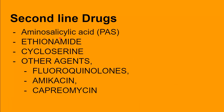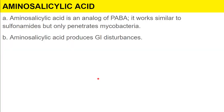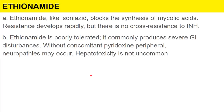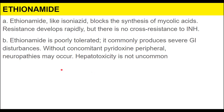Second-line drugs include aminosalicylic acid, which is an analog of PABA and works similarly to sulfonamides but only penetrates mycobacteria. It produces GI disturbances. Ethionamide, like isoniazid, blocks the synthesis of mycolic acid; resistance develops rapidly but there is no cross-resistance with isoniazid. It is poorly tolerated, commonly producing severe GI disturbances, and without concomitant pyridoxine, peripheral neuropathy can occur. Liver toxicity is not uncommon.